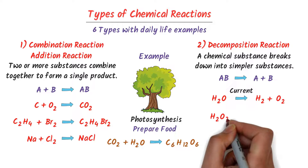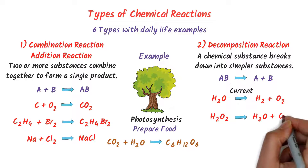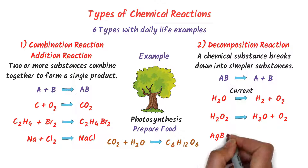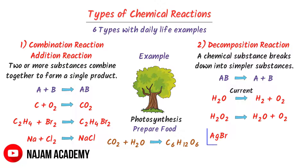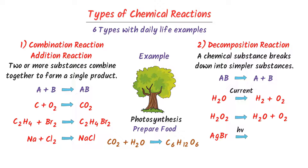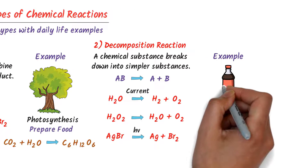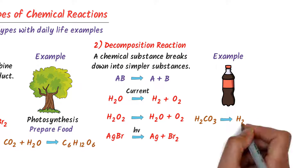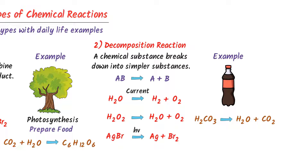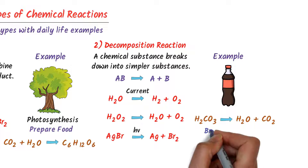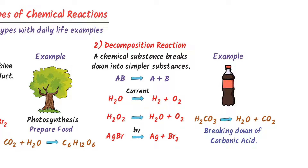Secondly, hydrogen peroxide decomposes to water plus oxygen gas. Thirdly, consider silver bromide, which is a light sensitive compound. When light falls on silver bromide, it decomposes to silver plus bromine gas. These reactions can occur spontaneously or be initiated by heat. The daily life example is when carbonic acid breaks down to produce water and carbon dioxide gas — this is a decomposition reaction.